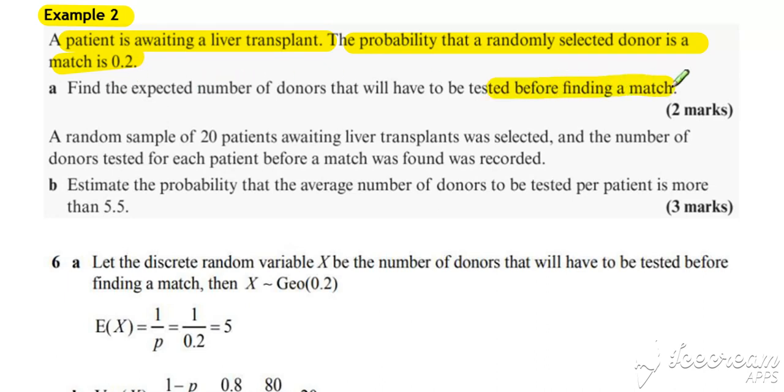We're looking at trials until we get a success, so for Example 2 we're starting with a geometric distribution. A random sample of 20 patients awaiting liver transplants was selected, and the number of donors tested for each patient before a match was found was recorded.